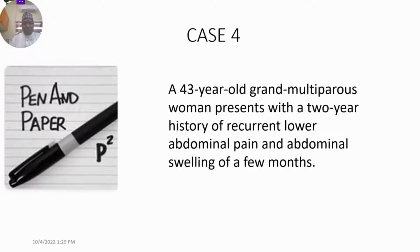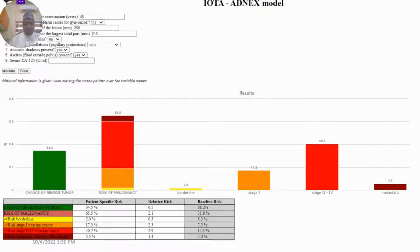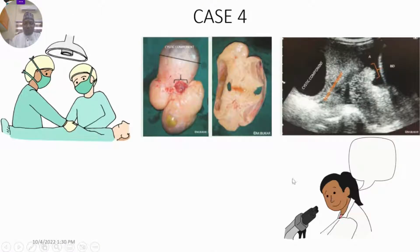Case 4 was a 43-year-old grand multiparous woman who presented with a 2-year history of recurrent abdominal pain and abdominal swelling over a few months. We inputted the information from the ultrasound scan into the ADNEX model. The model showed a risk of benign lesion, risk of malignancy, with the highest being stage 2 to 4. She had surgery and histopathology confirmed it was a fibroma.